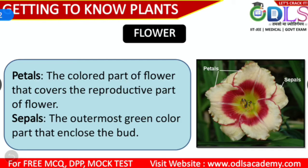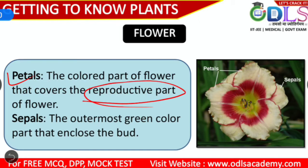The first part of the flower is the petals. Petals are the colored part of the flower that cover the reproductive part of the flower. So petals are the colored part of the flower. There is also a green colored part found in the flower, which is labeled in the same section.